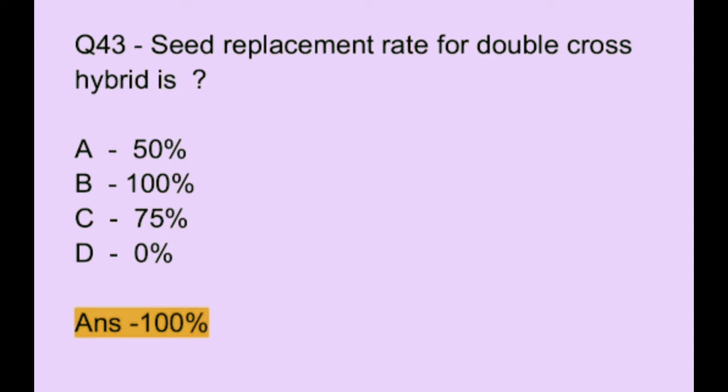Question number 43. Seed replacement rate for double cross hybrid is: Option A: 50%. Option B: 100%. Option C: 75%. Option D: 0%. The correct answer is option B, which is 100%.